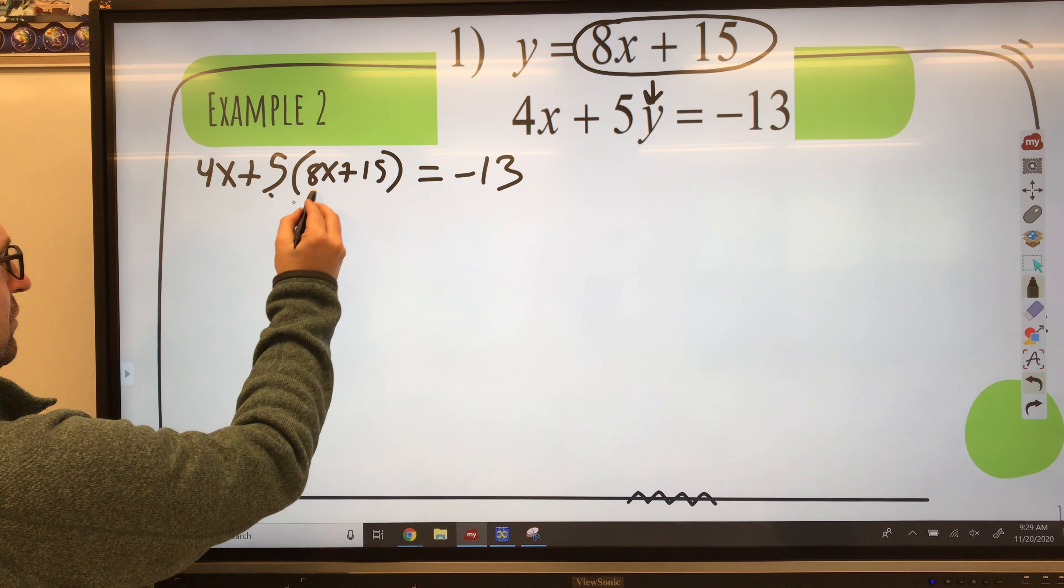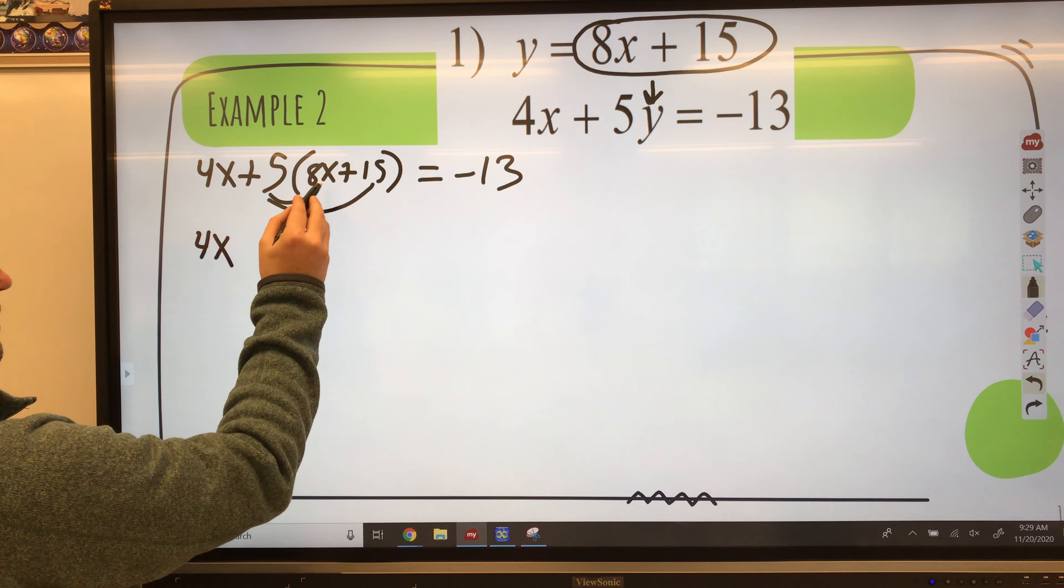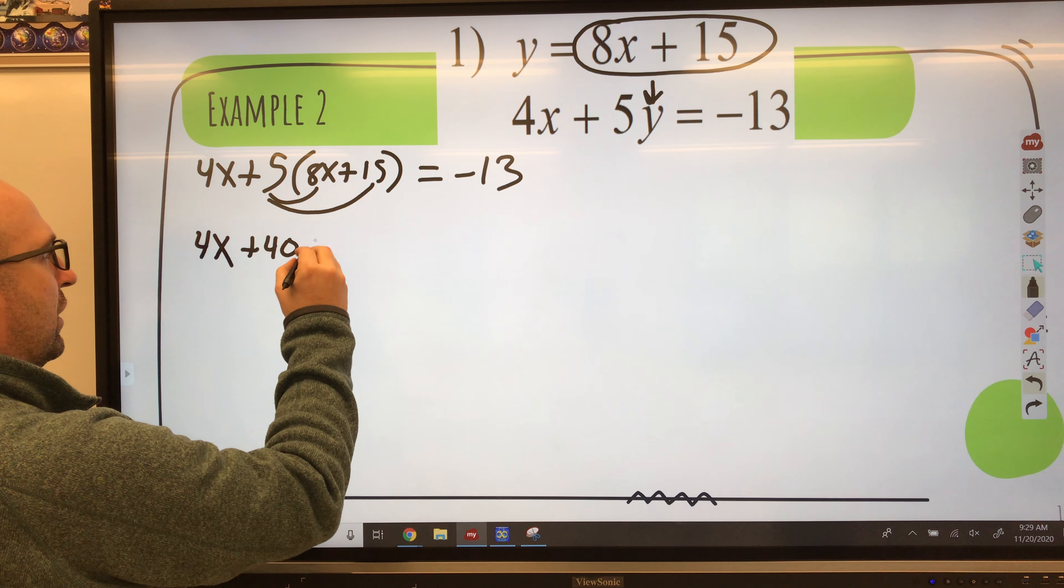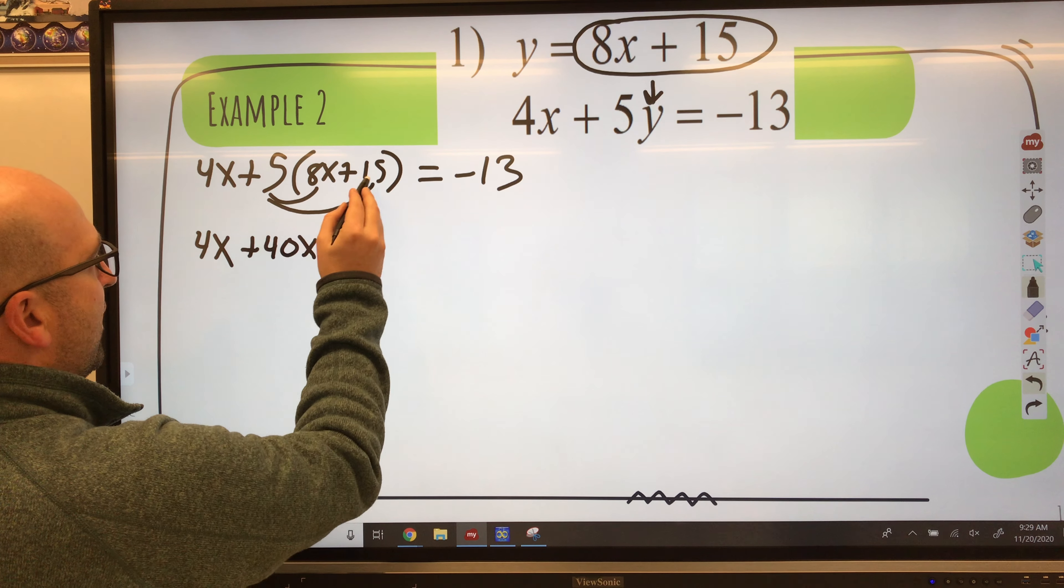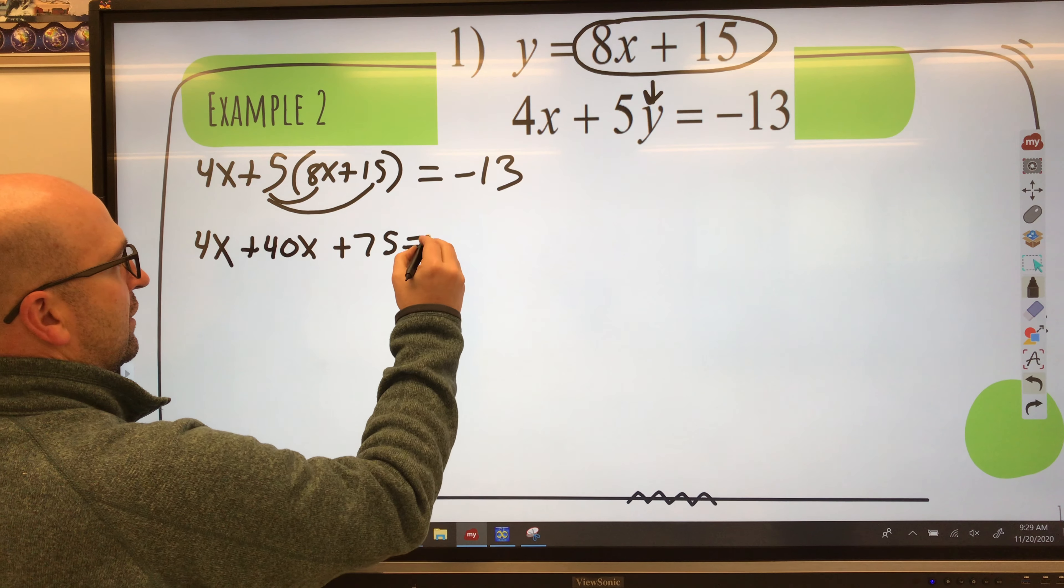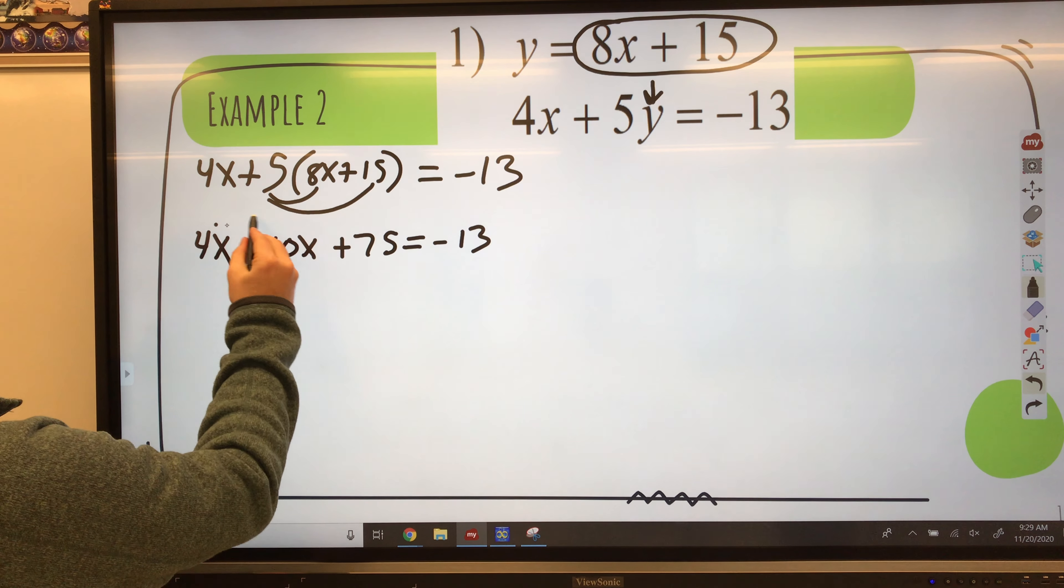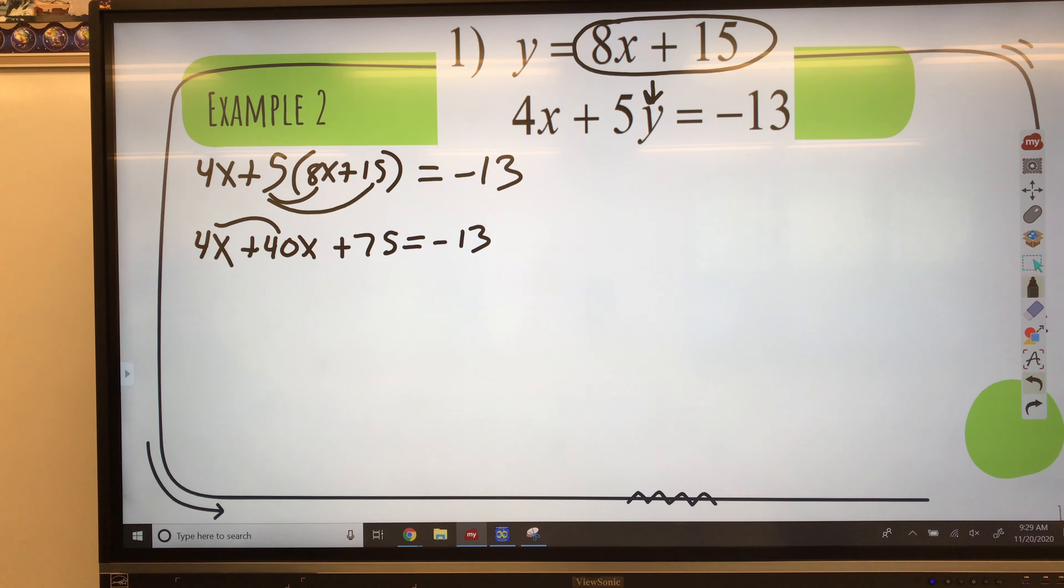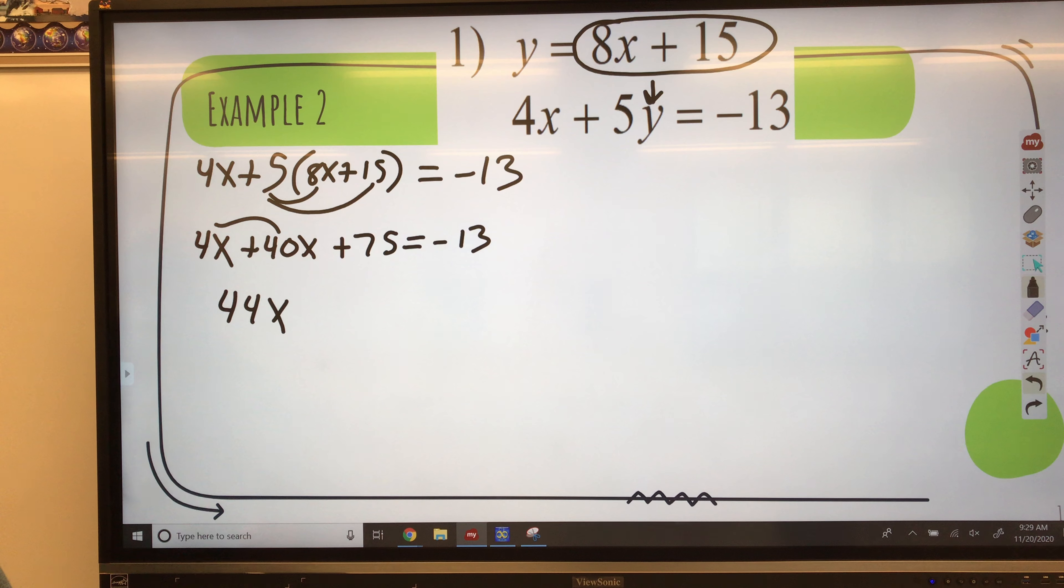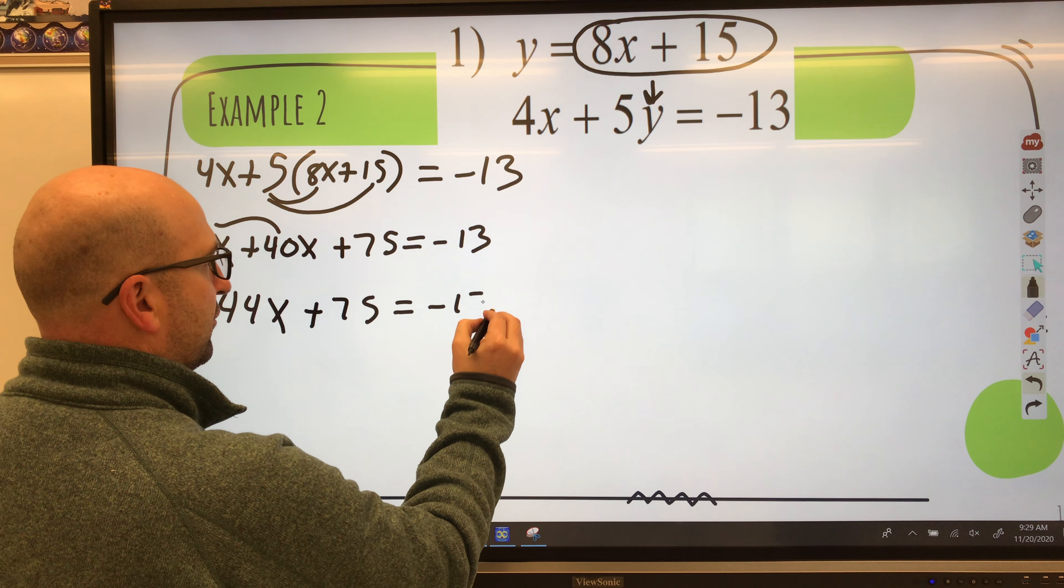So now I've got to distribute. And I've got 5 times 8x gives me 40x. 5 times 15 gives me 75 equals negative 13. I've got to combine my like terms here. And I've got 44x plus 75 equals negative 13.